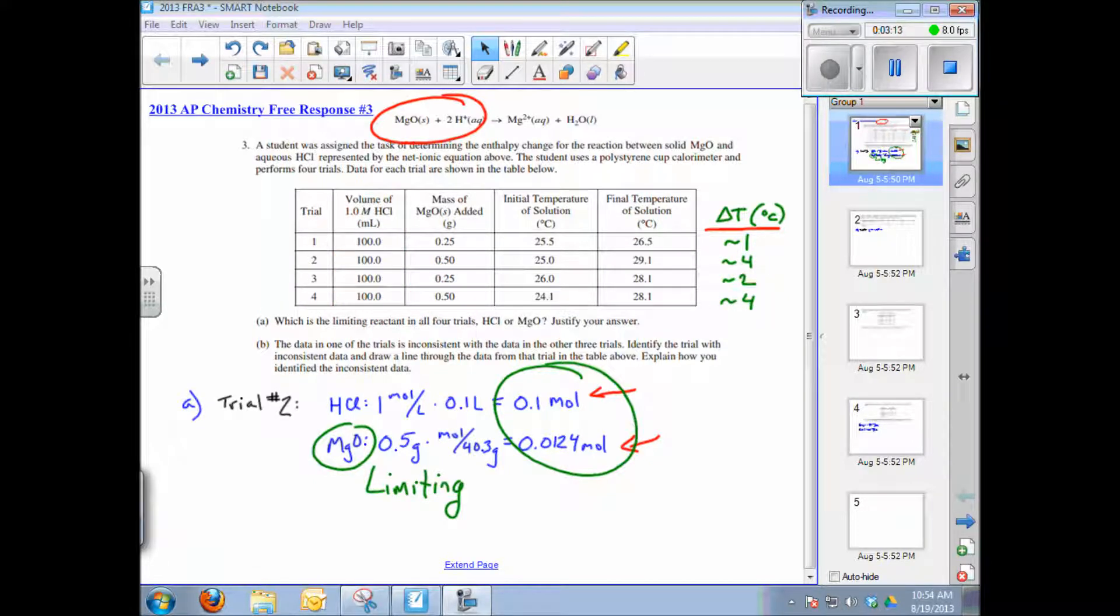Question subpart B says the data in one of the trials is inconsistent with the data in the other three. Which trial is inconsistent? Draw a line through it and explain how you identified that as the inconsistent data.